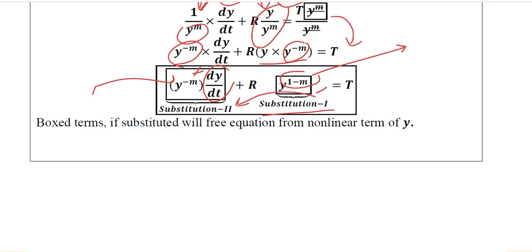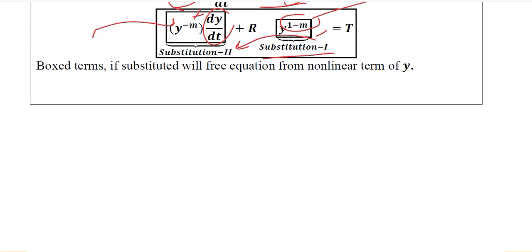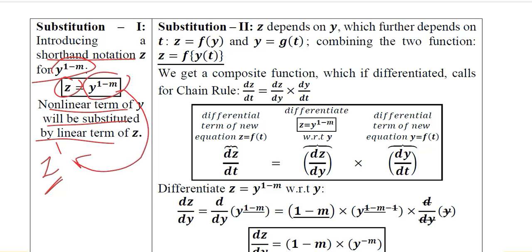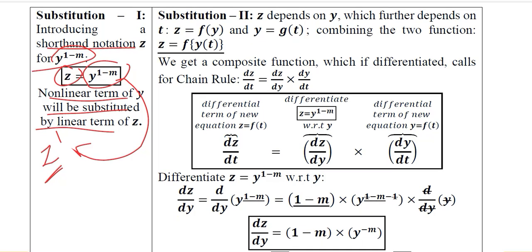These are the boxed terms we are going to substitute. In order to make it linear, we substitute using substitution 1: introducing a shorthand notation z for y raised to the power (1 minus m). So instead of writing y^(1−m), if we write z, it has a power of 1. The nonlinear term of y will be substituted with a linear term z, converting it using this auxiliary variable.